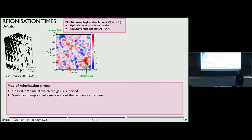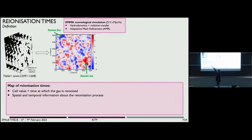I'm proposing something a bit different: the study of this simulated map called the reionization times map, which contains the time at which the gas has reionized at each position. The blue regions are the first regions to reionize, and the red ones are the last to reionize. It contains a lot of spatial and temporal information about the reionization process, and it also summarizes all the information you can find in a series of binary ionized gas maps in only one map.